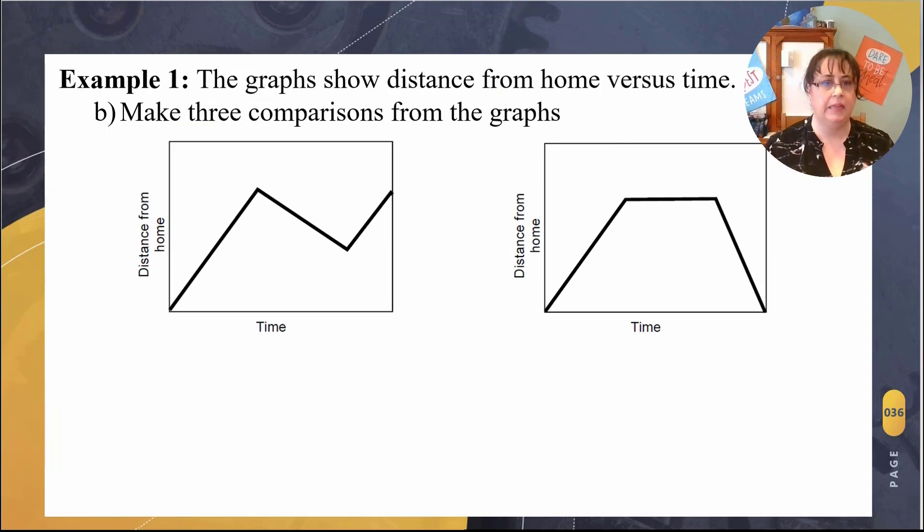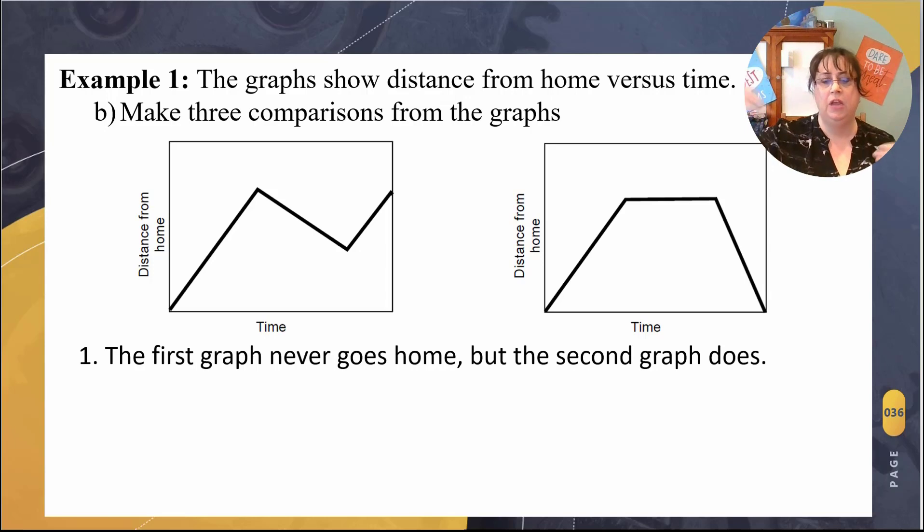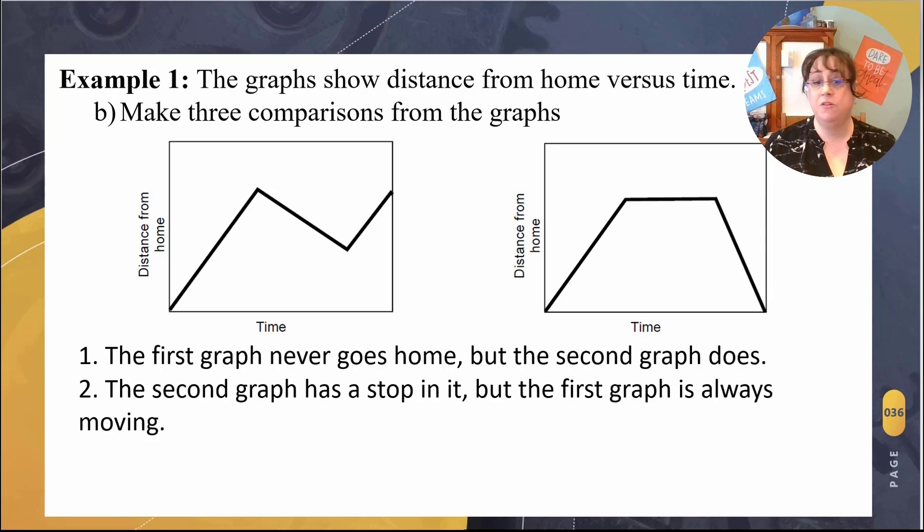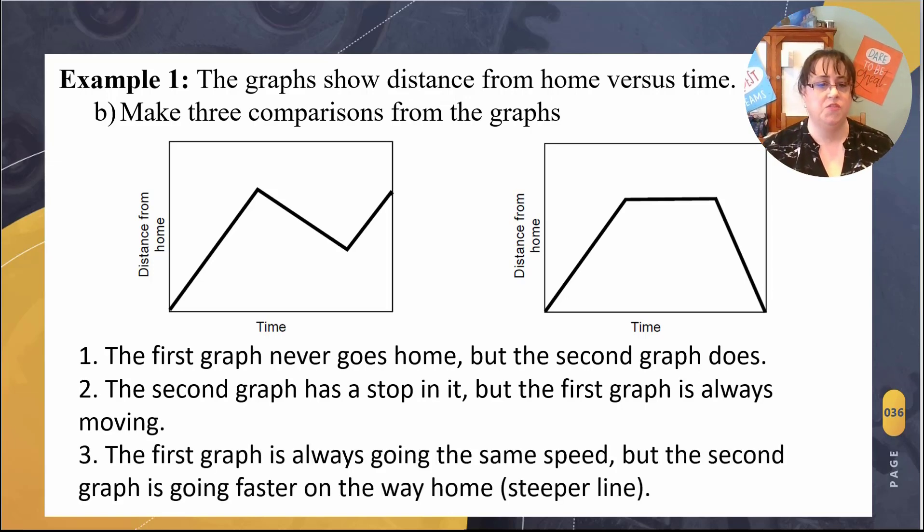So now let's look at both of these side by side and let's make three comparisons from those graphs. One thing that you might want to say, it depends on you. What was that last thing we added? The first graph never goes home, but the second graph does. So one graph you're consistently moving away from home, but the second graph goes home. Second graph has a stop in it, but the first one's always moving. The first graph is always going the same speed, but the second graph is going faster on the way home. How did they know that the second one's going faster? Well, this one's steeper. Remember steeper lines mean we're going faster. So steeper lines mean I'm going faster and these lines seem to be at the same slope, even though this one's down, even though this is a negative slope, it seems to be kind of at the same pitch, just in the opposite direction. So we could say that there may be other things that you noticed too, but those were the three things I picked out. If you could pick out more things, that would be even better.